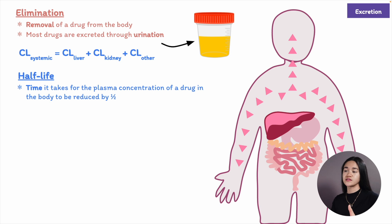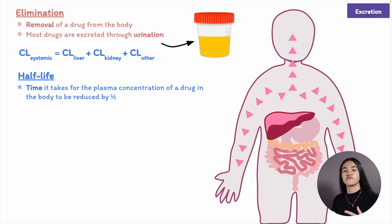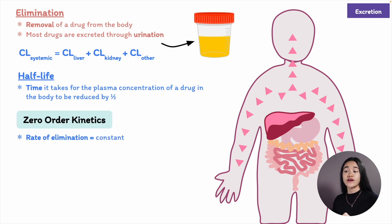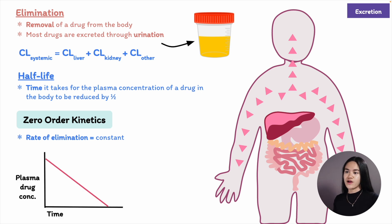Half-life is the time it takes for the plasma concentration of a drug to be reduced by one half. Half-life and volume of distribution help determine how long a drug's effects last, how frequently it needs to be administered, and how long it takes to reach steady state. There are two types of elimination kinetics: zero-order kinetics, where the rate of elimination is constant and independent of drug concentration — producing a straight line on a graph — with aspirin as an example.